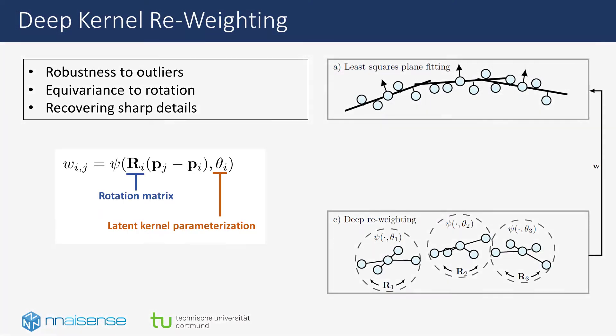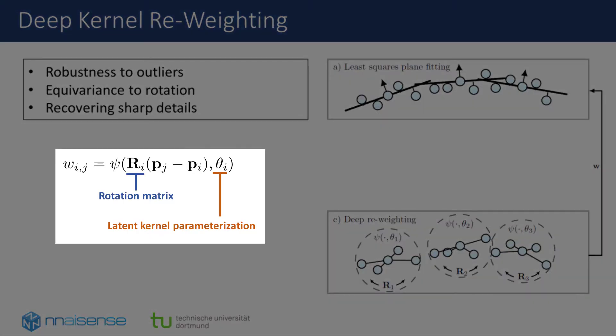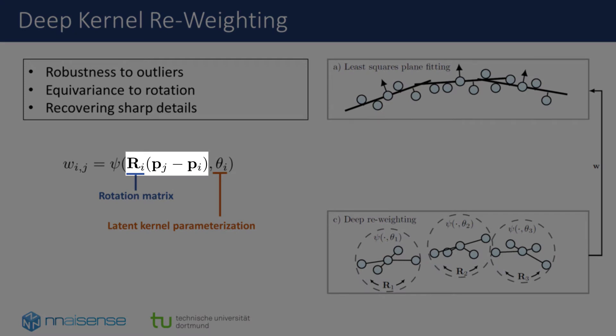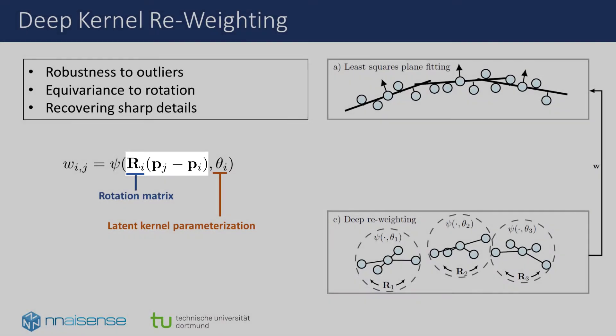We propose a deep kernel function psi that re-weights the point pairs of local neighborhoods. The kernel function receives two inputs: first, the Cartesian relation vectors, which we bring into a canonical pose based on the neighborhood pose information given in rotations R. We parameterize the SO3 rotations R through quaternions, which we convert to matrices before applying them to the vectors.